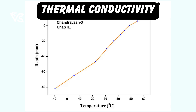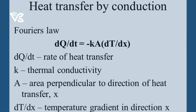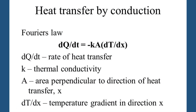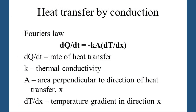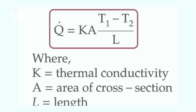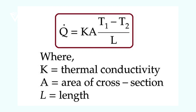Let's talk about the formula. Here, DQ/DT represents the rate of heat transfer via a surface with area A. Of all the factors in this relation, the one that depends on the material under consideration is K, also known as thermal conductivity.